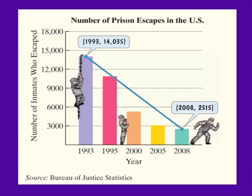So when we look at the graph, we note that we have a bar graph and we have some values that are given to us. For instance, in the year 1993, we're given the value of 14,035.